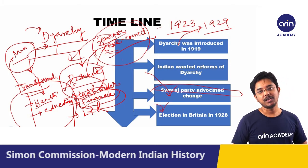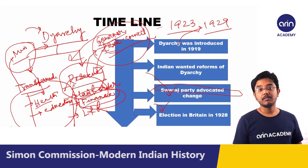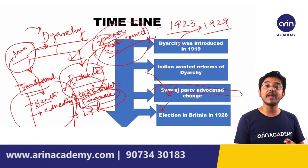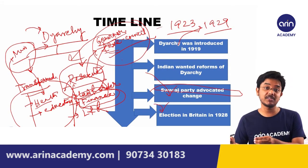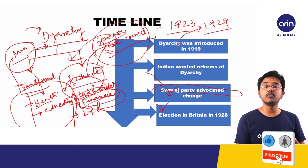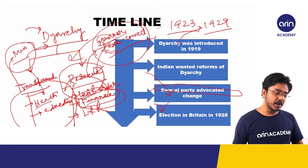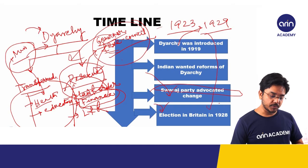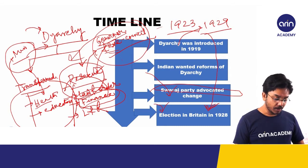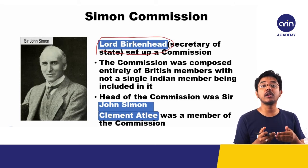There was another issue: elections in Britain in 1928. The Conservative Party was in power and the Labour Party was in opposition. The Conservative Party was apprehensive they might lose the election. So just one year before 1929, during the election year of 1928, the Conservative government instructed the Secretary of State, Lord Birkenhead, to form a commission to look into the constitutional reforms of India — prior to the scheduled 1929 date.